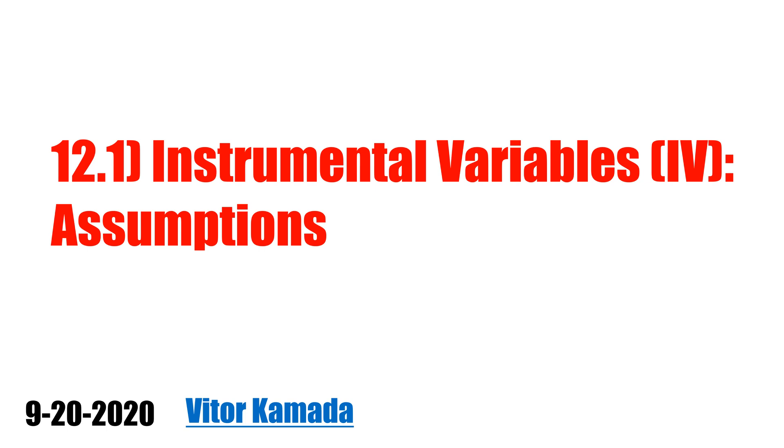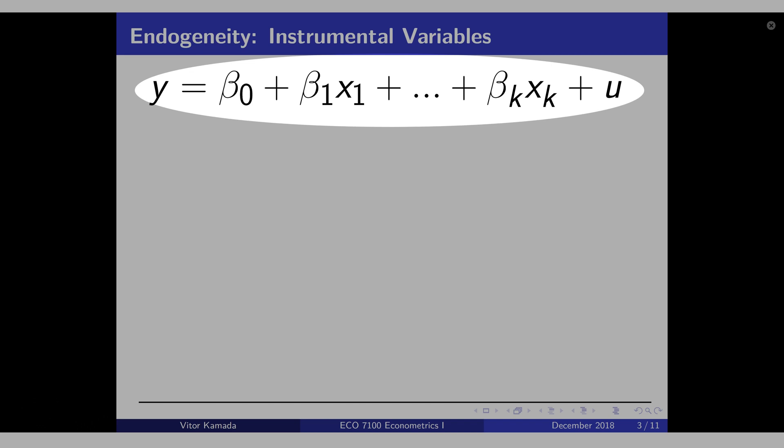In this video, let's understand the assumptions of instrumental variables. Let's assume that you have this model here. Think that y is salary and xk is education, and the ability is inside this error term u. When xk is correlated with u, we call this endogeneity, and this will bias the beta k.